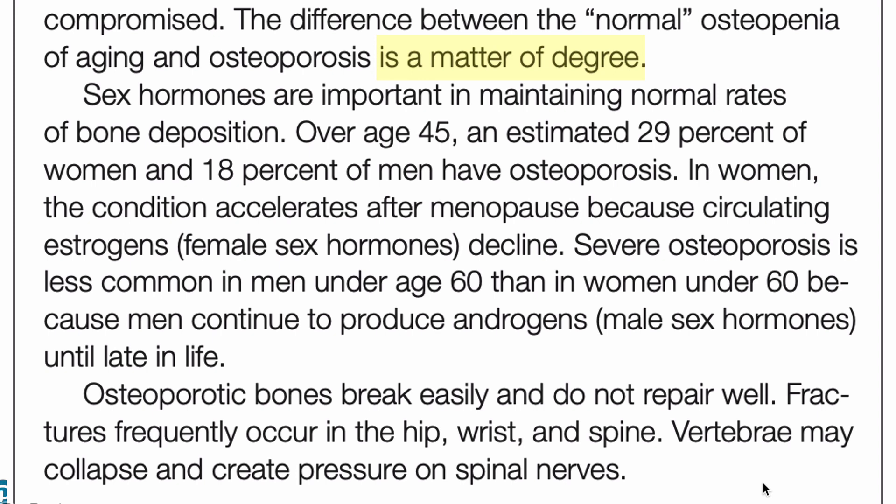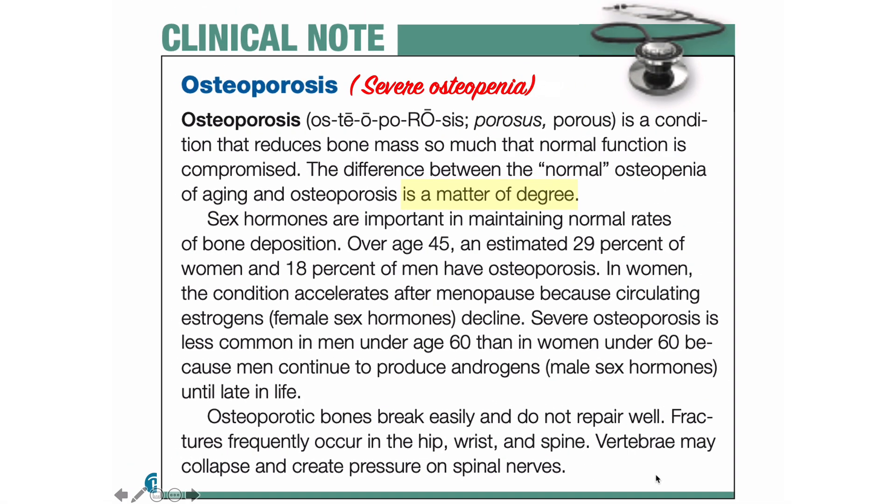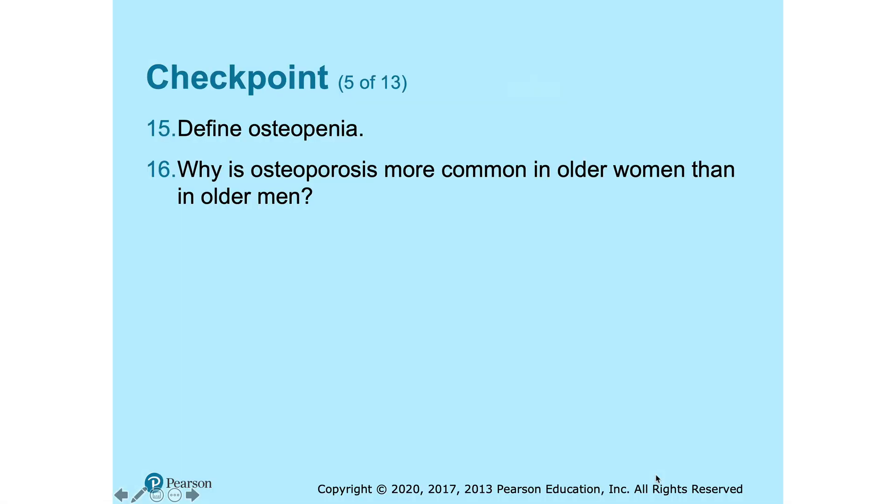Osteoporotic bones break easily and do not repair well. Fractures frequently occur in the hip, wrist, and spine. Vertebrae may collapse and create pressure on the spinal nerves, causing pain or numbness in the limbs.